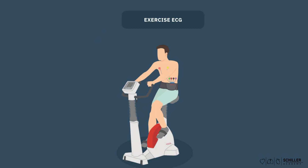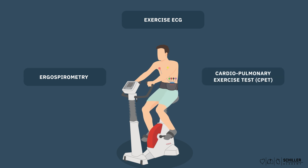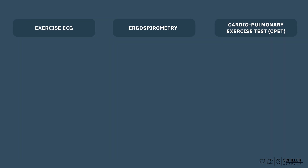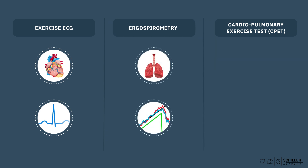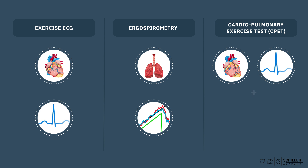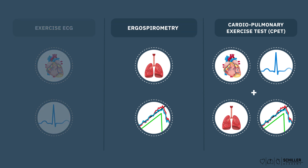Exercise ECG is often linked to ergospirometry or cardiopulmonary exercise tests, and these three different tests are often mistaken to be the same. An exercise ECG assesses the cardiac function during exercise, ergospirometry assesses the pulmonary function during exercise. And if an exercise ECG is combined with ergospirometry, this is commonly known as cardiopulmonary exercise test, abbreviated CPET. Ergospirometry and CPET will be covered in separate training modules.